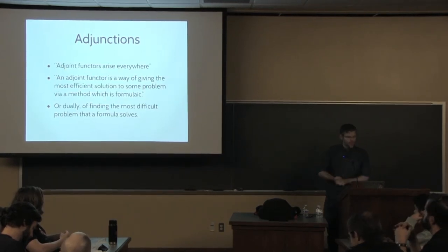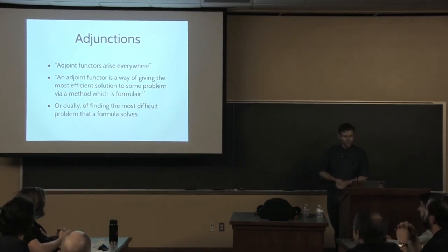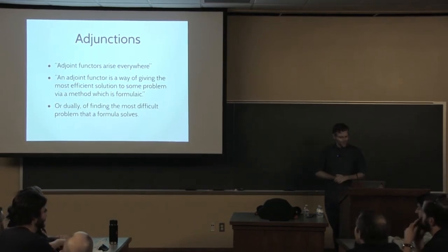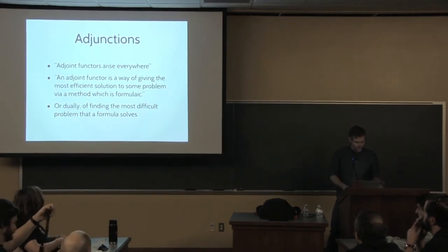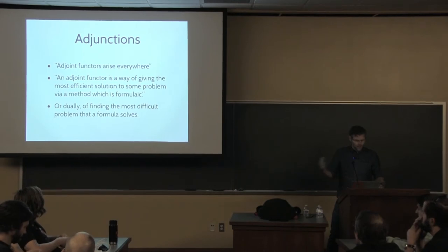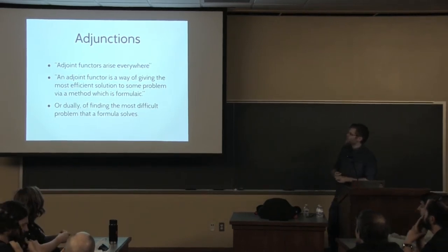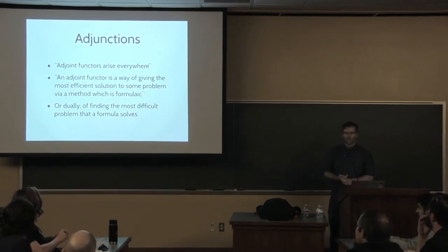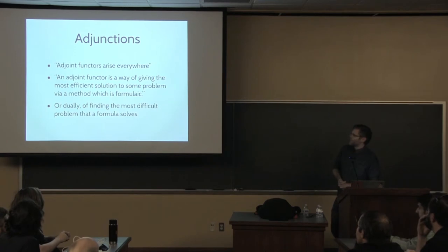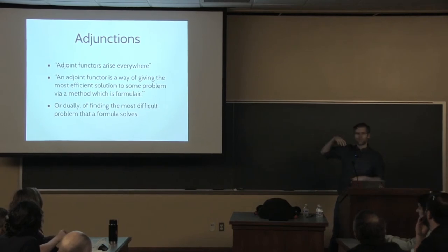Saunders MacLane famously said, adjoint functors arise everywhere. Wikipedia says that an adjoint functor is a way of giving the most efficient solution to some problem via a method which is formulaic. I just think that's an awesome definition. By formulaic, they mean functorial — you should think functor.